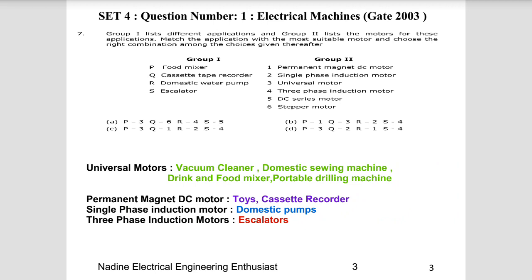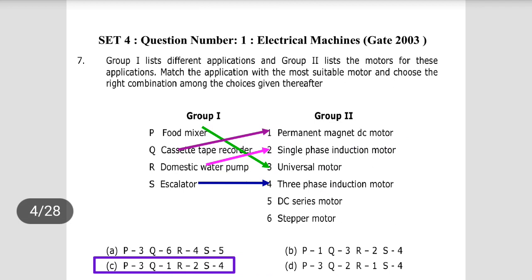For small toys and cassette tape recorders, permanent magnet DC motors are used. For low capacity domestic applications, single phase induction motors are mostly used. Three phase induction motors are used in escalators — more than 80% of industrial motors are three phase induction motors. So: food mixer → universal motor, cassette tape recorder → permanent magnet DC motor, domestic water pump → single phase induction motor, escalators → three phase induction motor. Choice C is the right answer.